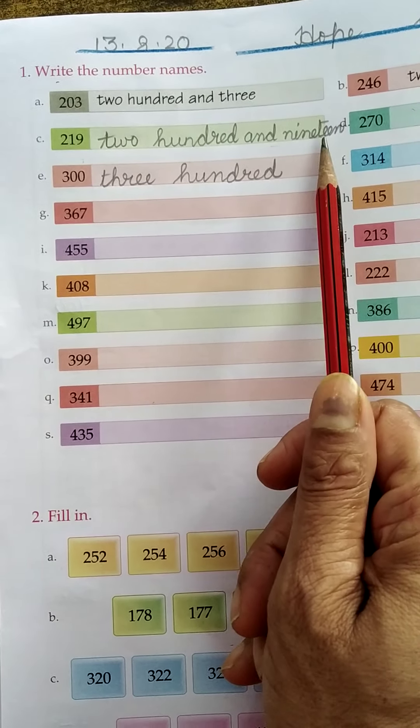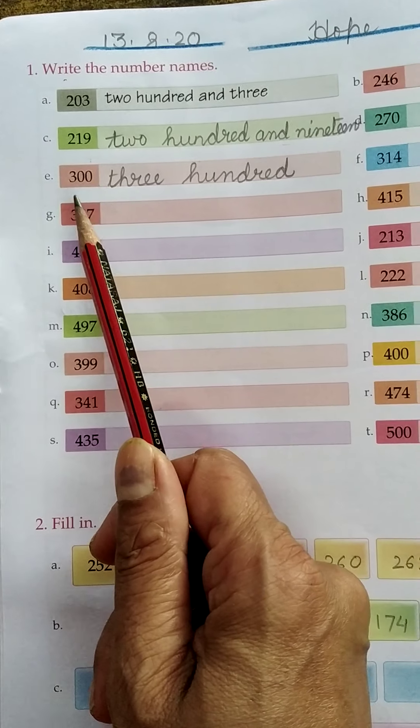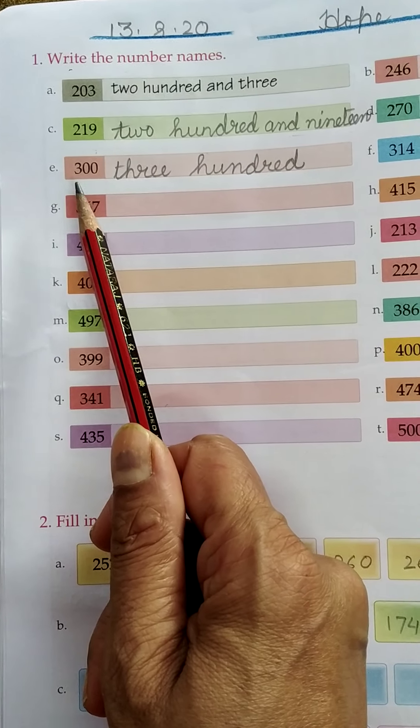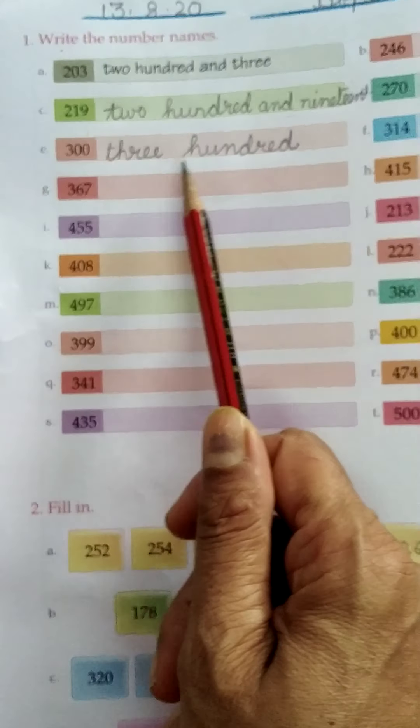When we put the and, 19. Again, what is the number written here? It is 300. So we write the spelling of 300.